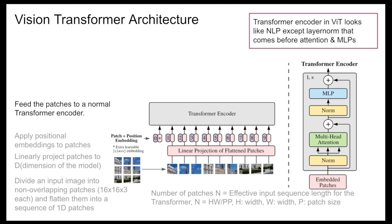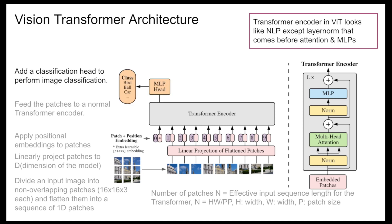The fourth step is to feed the patches to a normal transformer encoder. This transformer encoder is pretty much the same as the encoder in NLP, with the exception of layer normalization that comes before the attention and MLP blocks. After that, you add a classification head to perform image classification.